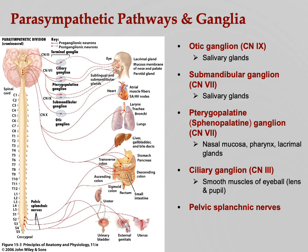Finally, the pelvic splanchnic nerves emerge from S2 to S4 — just as we saw sympathetic splanchnic nerves. These go to the intestines, urinary bladder, and genitals, controlling urination, defecation, and sexual arousal. A mnemonic: S2 to S4 keeps your pecker off the floor.